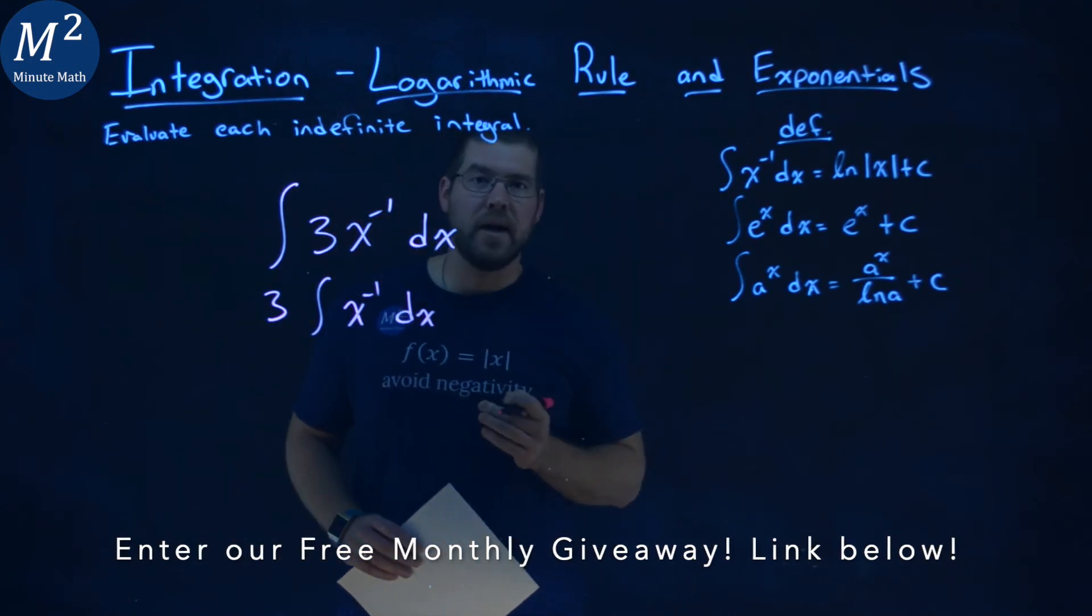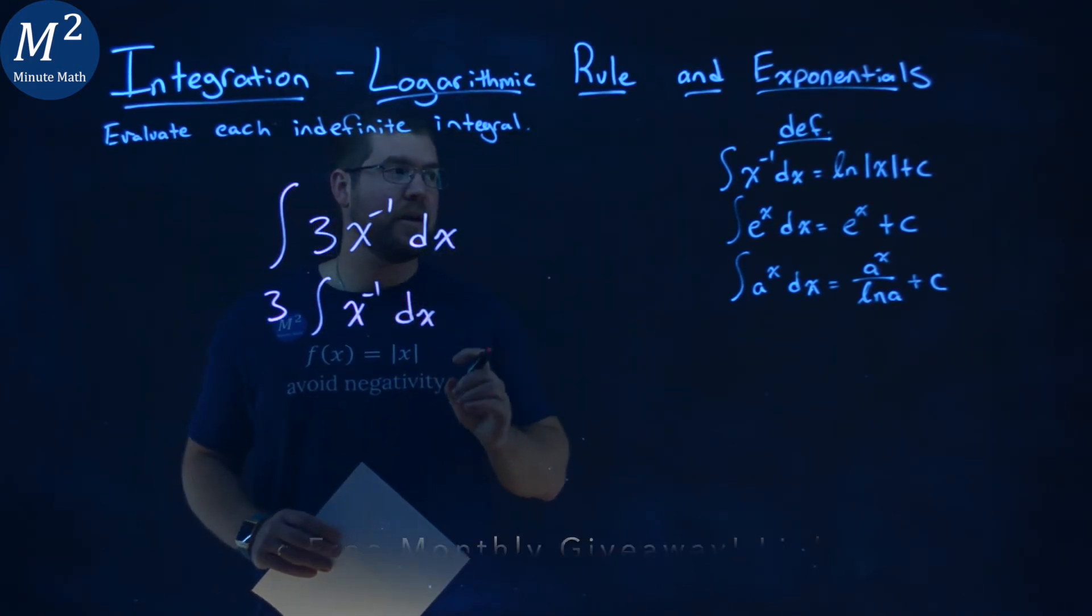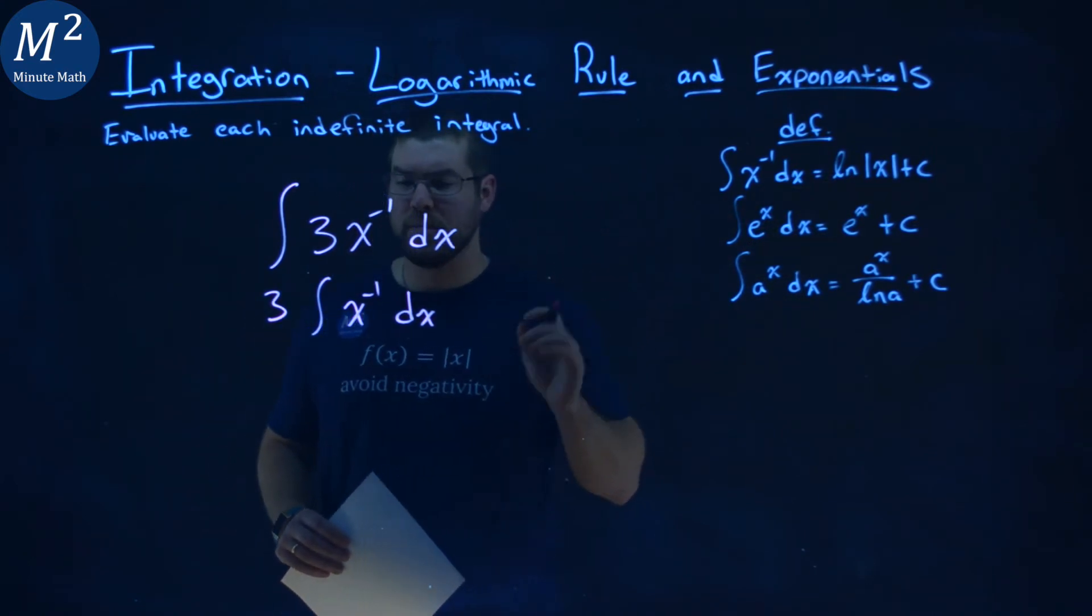and this is where we can apply our definition. The integral of x to the negative 1 power dx is equal to the natural log of absolute value of x plus c.